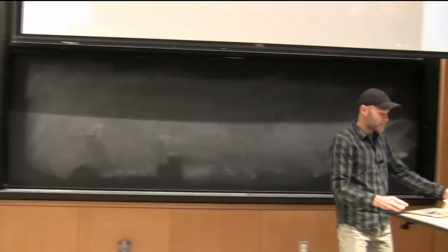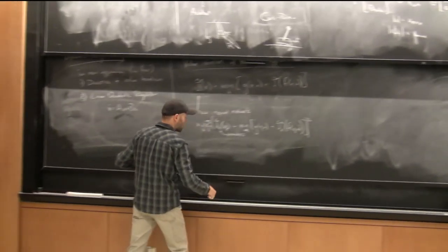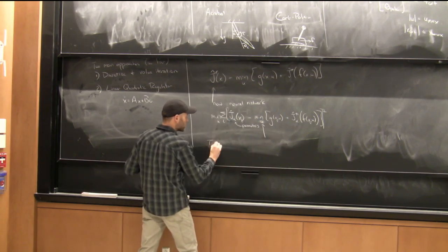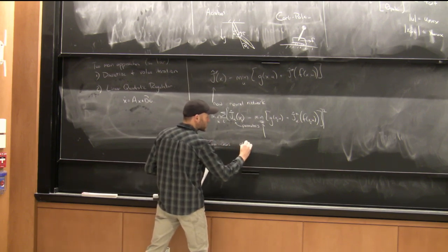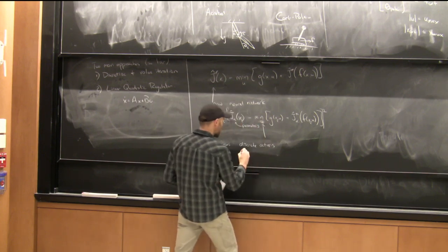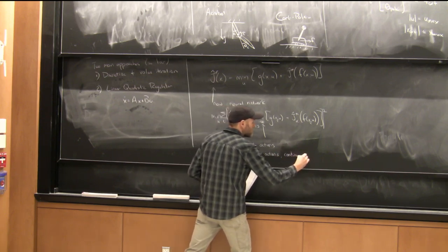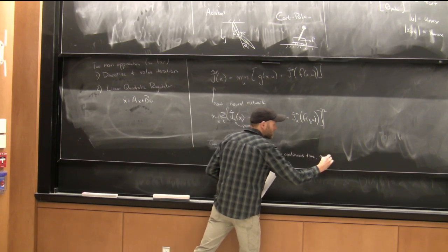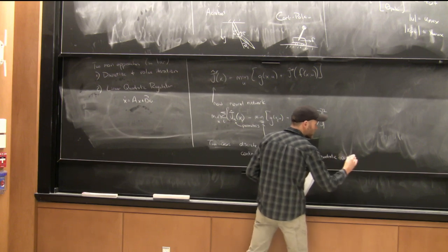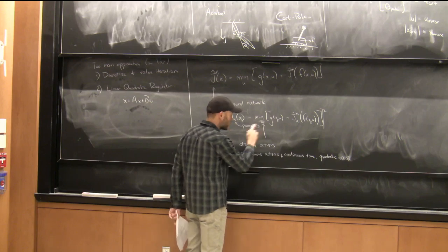A student asks how you find the optimal cost-to-go on the right-hand side. There are two cases: discrete actions, where you try a bunch of U values and take the smallest; and continuous actions with quadratic cost, where we have an explicit solution to the minimization over U. In those cases we can solve for the update exactly. Let me show you in code.